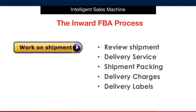While working on this shipment, you will be completing the following tasks to finish the inward FBA order: 1. Reviewing the shipment numbers. 2. Selecting the delivery service being used. 3. Inserting shipment package details. 4. Verifying shipment charges. And finally, 5. Producing the delivery labels.